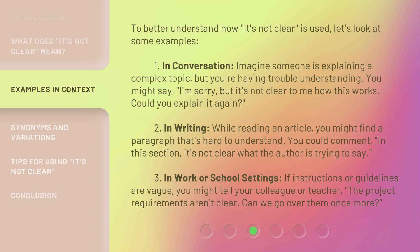Example 2 — In writing: while reading an article, you might find a paragraph that's hard to understand. You could comment, 'In this section, it's not clear what the author is trying to say.' Example 3 — In work or school settings: if instructions or guidelines are vague, you might tell your colleague or teacher, 'The project requirements aren't clear. Can we go over them once more?'